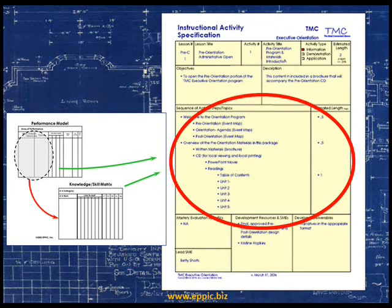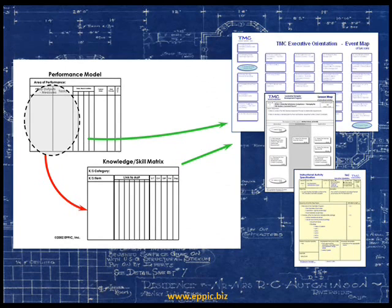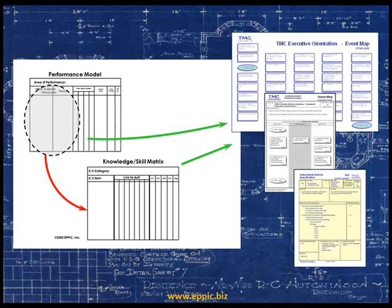All of the performance model data, all of the knowledge and skill data collected, finds its way to this level of design in the PAC processes. This is where the nails and the wallboard and the cove molding — all of the components of the eventual architectural design — reside. The performance model data and knowledge and skill data is designed in a facilitated process: initially sorted into the various lessons of the event, then into the information, demonstration, and application elements of a lesson, and finally into an instructional activity. The design process is a process of sorting this data into the eventual lowest level of design — the instructional activity specification, or activity spec.